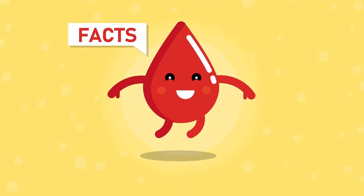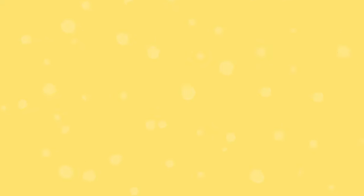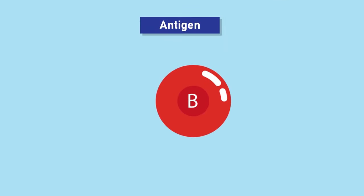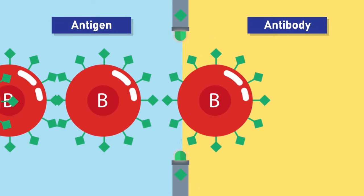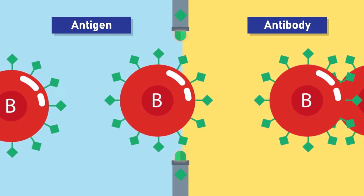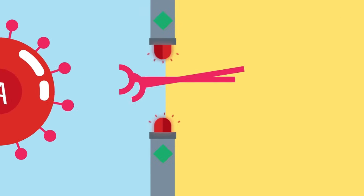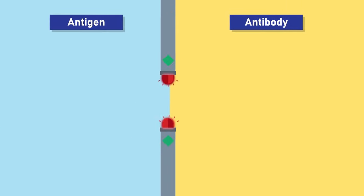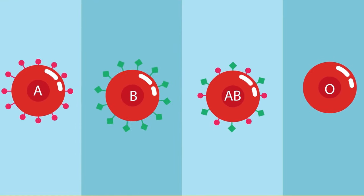Blood group facts. There are eight different common blood types, which are determined by the presence or absence of certain antigens, which are substances that can trigger an immune response if they are foreign to the human body. Since some antigens can trigger a patient's immune system to attack the transfused blood, safe blood transfusions depend on careful blood typing and cross-matching.